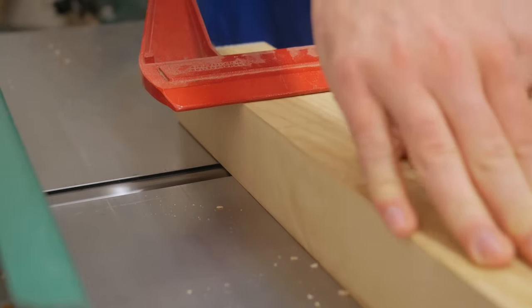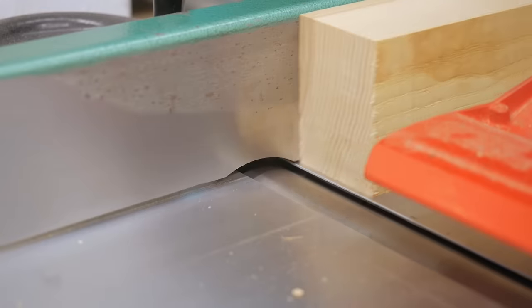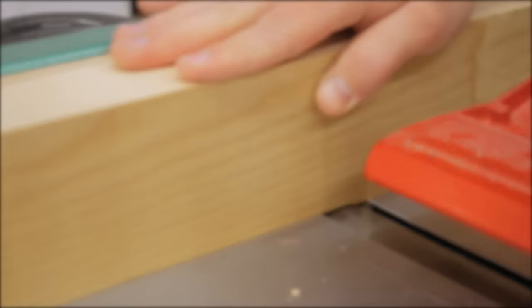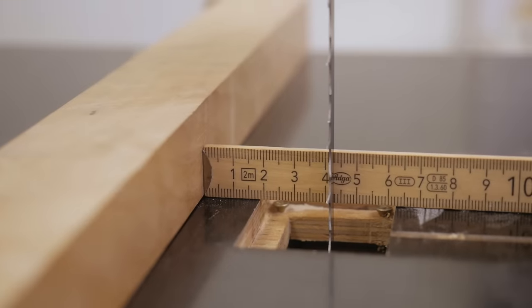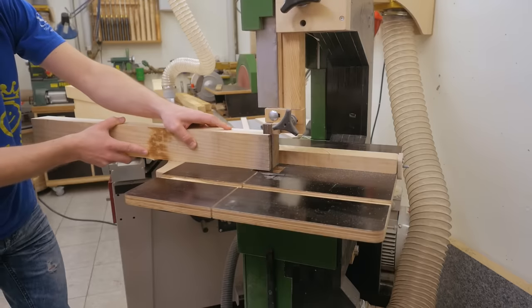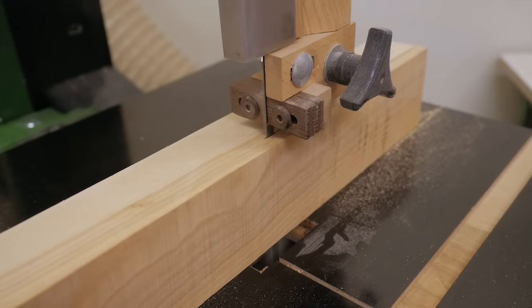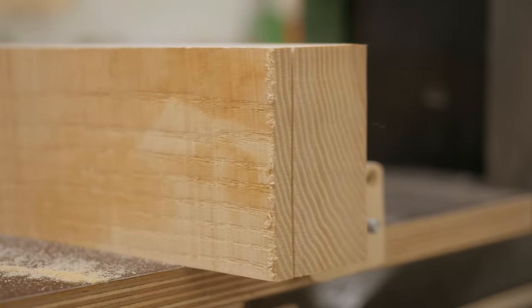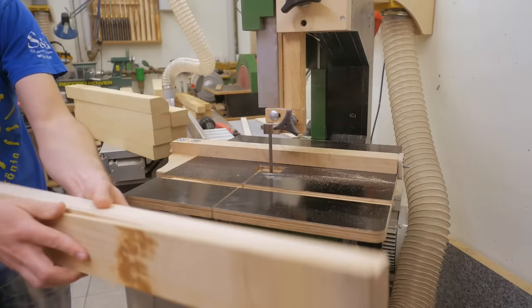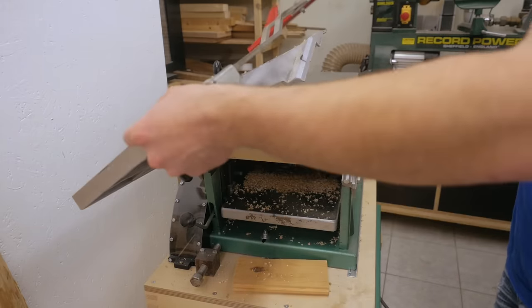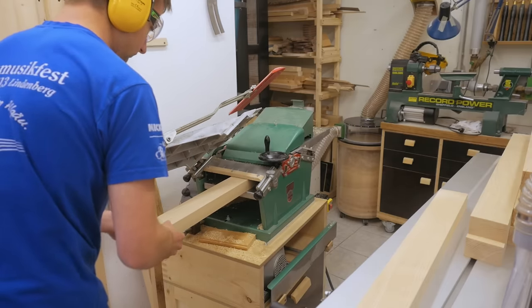Next making one face and edge flat on the jointer. Then cutting them to rough thickness on the bandsaw. And to final thickness with the planer. I could do all the thicknessing with the planer but with the bandsaw it's faster and doesn't create as much chips.